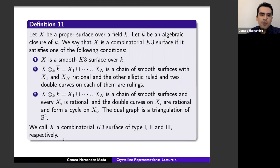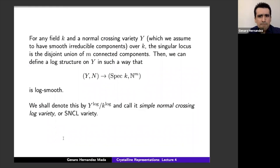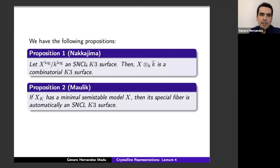The definition of combinatorial K3 surface mirrors the Kulikov classification: Type I is a smooth K3 surface over k; Type II is a chain of smooth surfaces with first and last rational, others elliptic ruled, with two double curves as ruling sections; Type III has all components rational, double curves rational forming a cycle, and dual graph a triangulation of S².